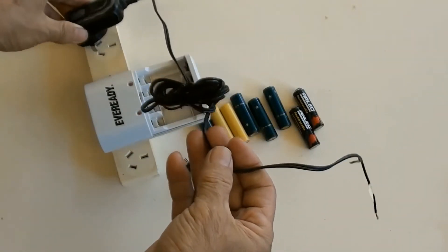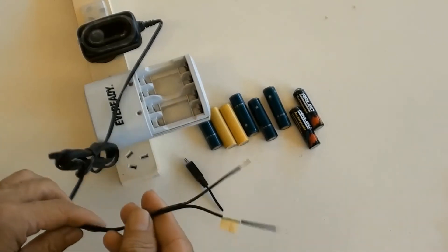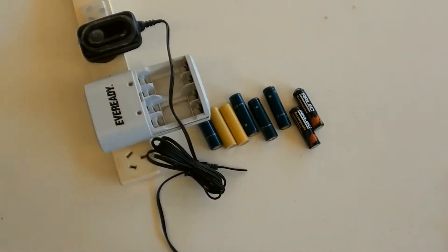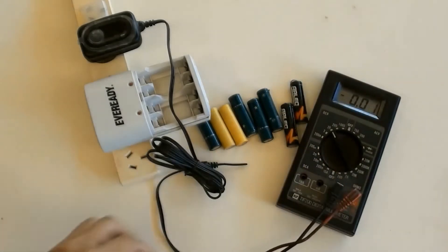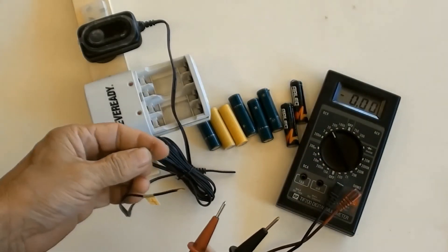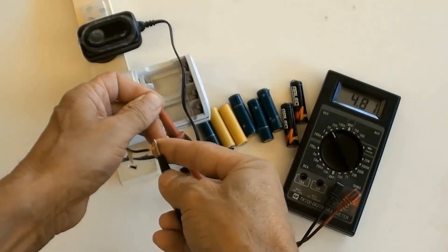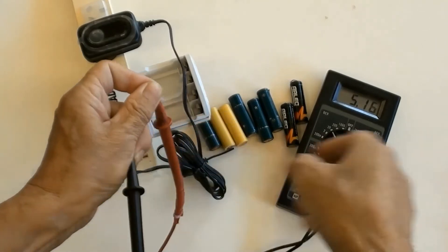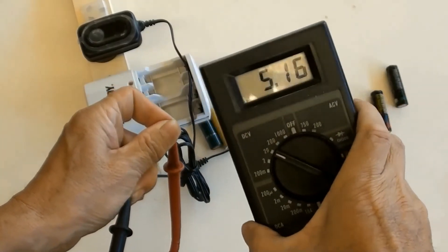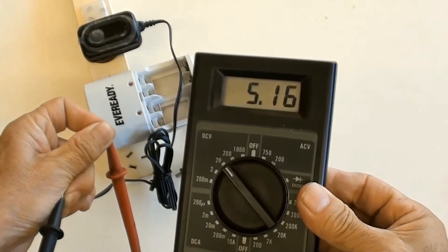Live power has been already on. Measuring DC output. 5.16V. Let's say it is 5V.